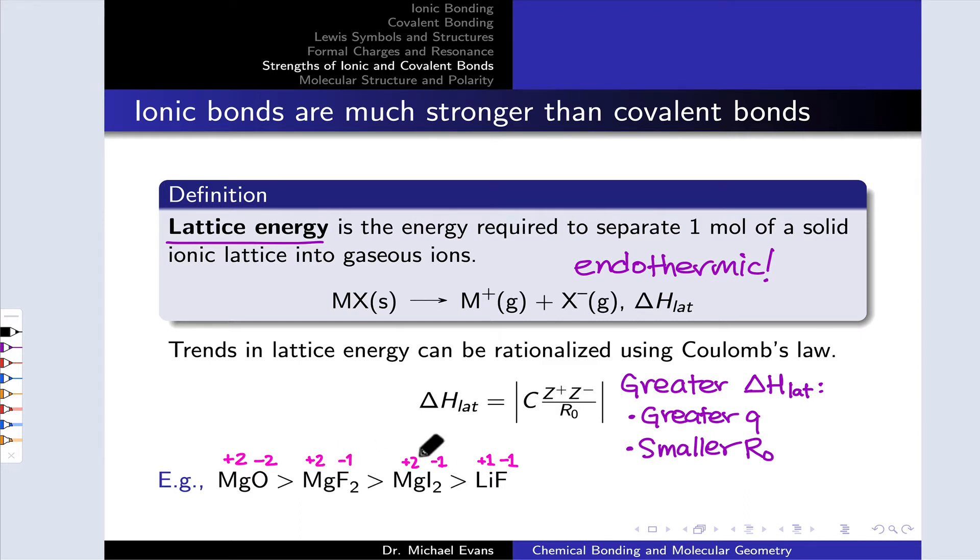Now, MgF₂ and MgI₂ have matching charges. So how do we rationalize this difference in lattice energy? Well, to understand this difference, we have to look at fluoride versus iodide and appreciate that fluoride is a significantly smaller ion than iodide. These are both group 17 elements, both halide anions. Iodide is further down on the periodic table, and so it's much larger than fluoride.